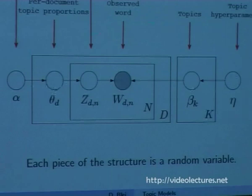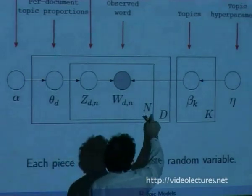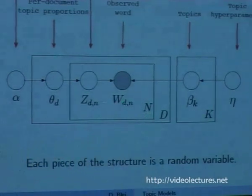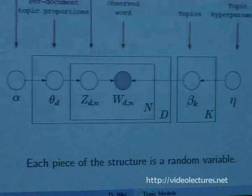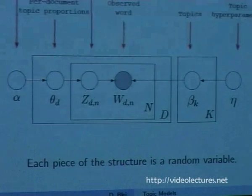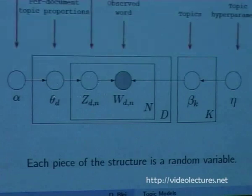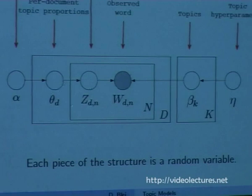Then for each word — that's the N plate inside the D plate — we have Z_dn, the topic assignment: that's the colored coin from the picture. Z_dn depends on theta, because it's drawn from a distribution with parameter theta. If theta has probabilities for blue, yellow, and pink, then Z_dn might be pink, drawn from that particular theta. There is a Z for every word, because there is a colored coin for every word.